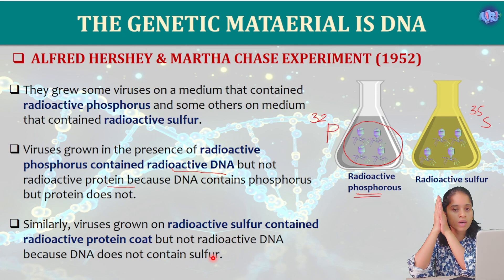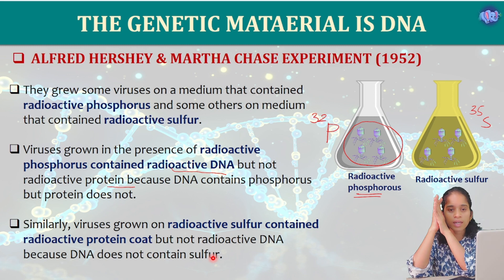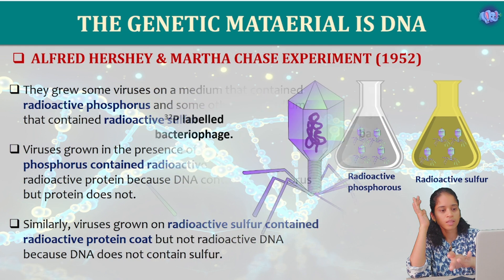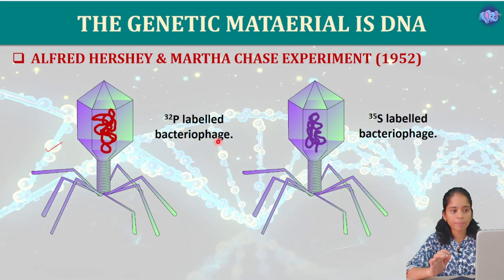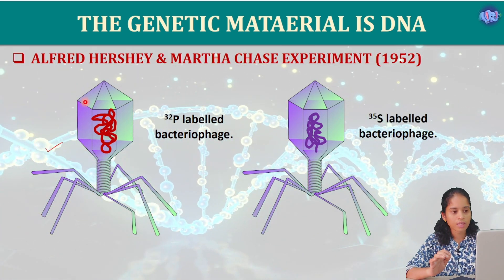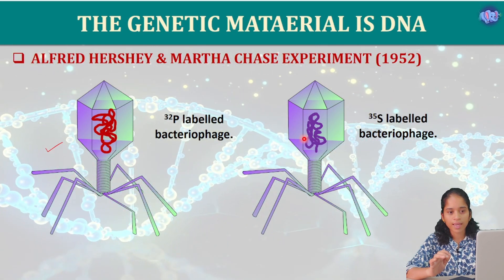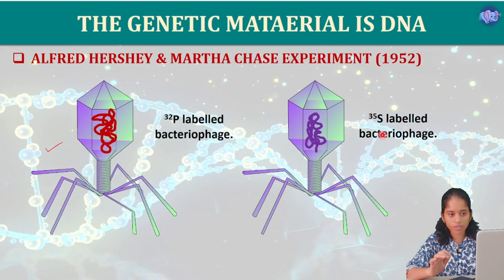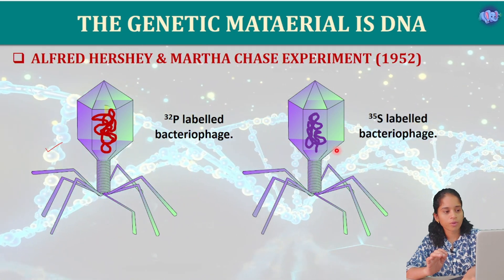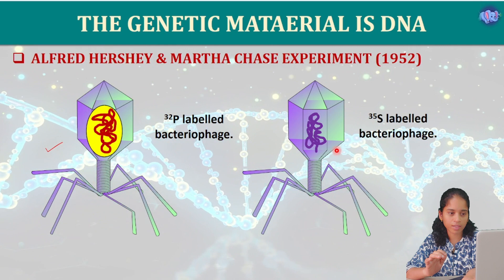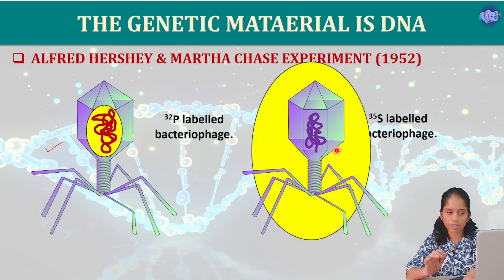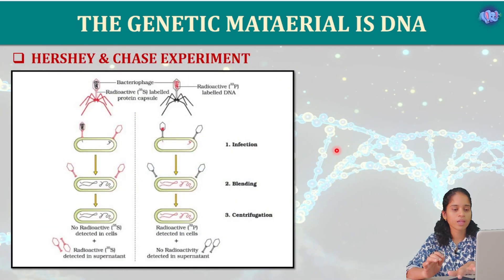The label for DNA is radioactive phosphorus P32, and the label for protein is radioactive sulfur S35. In this diagram you can see the P32-labelled bacteriophage, where the DNA is radioactive. In the S35-labelled bacteriophage, the protein coat is radioactive. So in the first case DNA is radioactive, and in the second case the protein coat is radioactive.